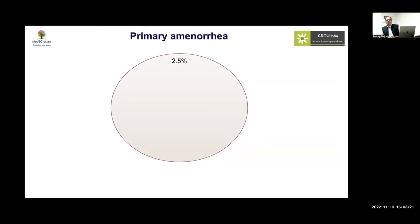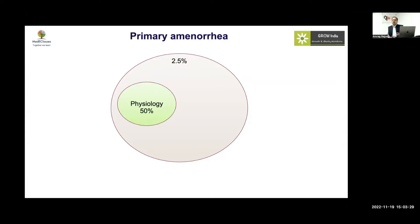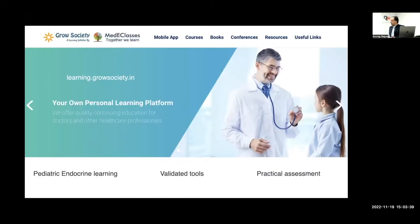Primary amenorrhea occurs in around 2.5% of cases. Most would be physiological or functional, but there is still a significant number of pathological causes which we need to evaluate. Therefore, there is a need for meticulous evaluation.